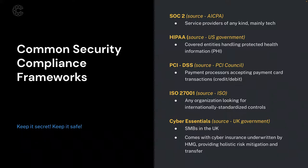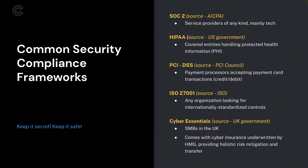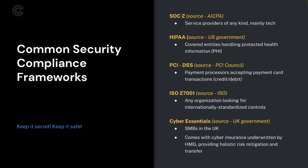HIPAA, sourced from the U.S. government, provides compliance requirements for covered entities — legally defined as any organization dealing with protected health information. HIPAA creates two categories: covered entities like healthcare plans or healthcare providers, and business associates — organizations supporting a covered entity. If the covered entity shares data with you, you need a reciprocal security program and the ability to adequately protect that data.